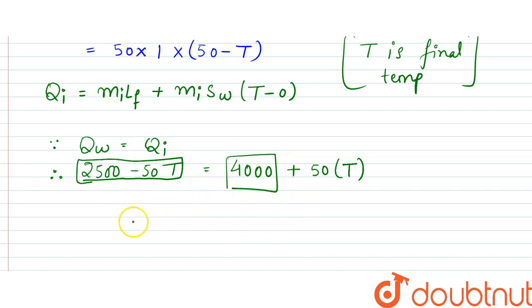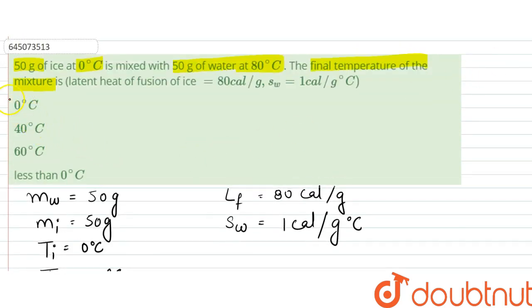So what we can say is that the final temperature would be zero degrees Celsius, and it is a mixture of water and ice both. So our answer is zero degrees Celsius, that is option A.